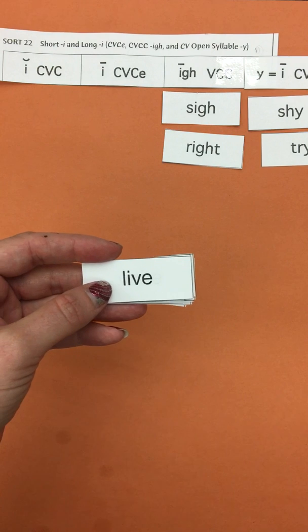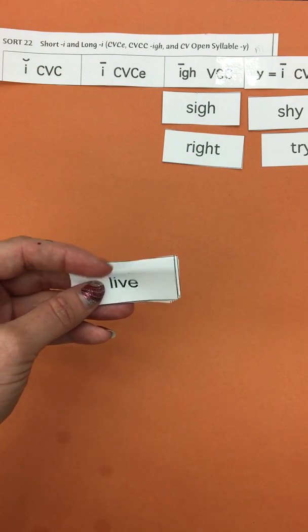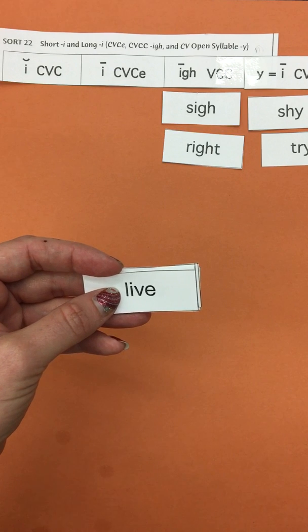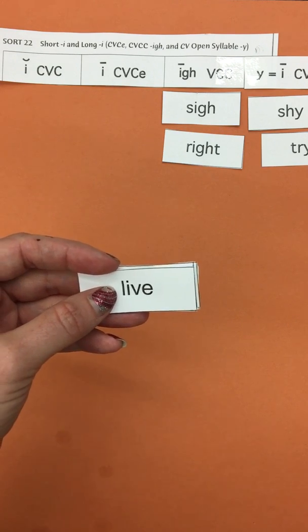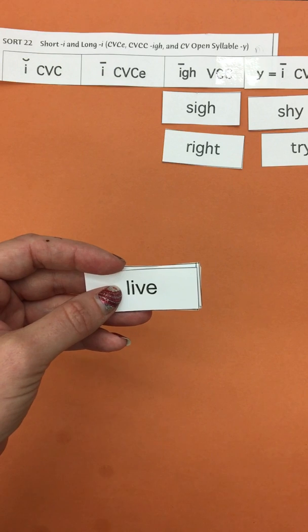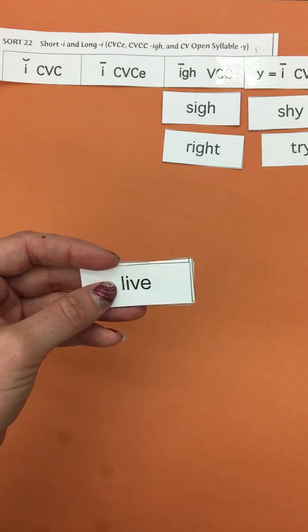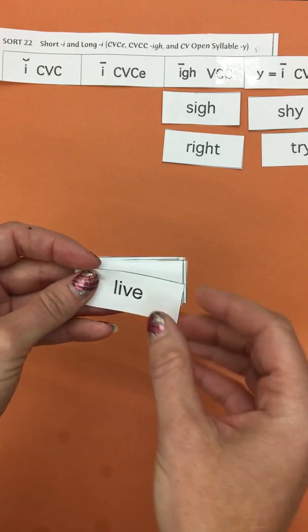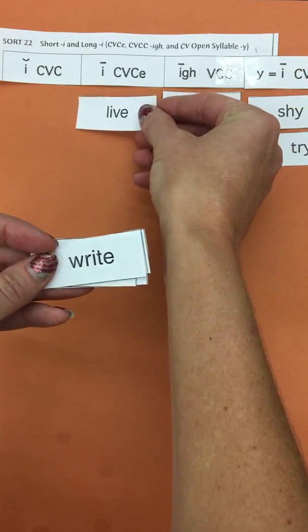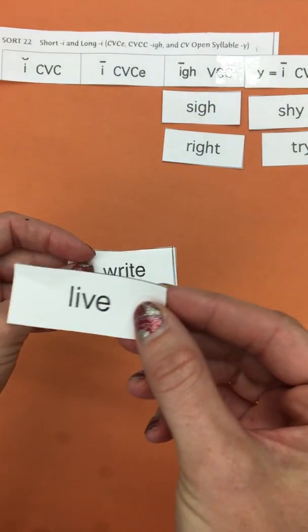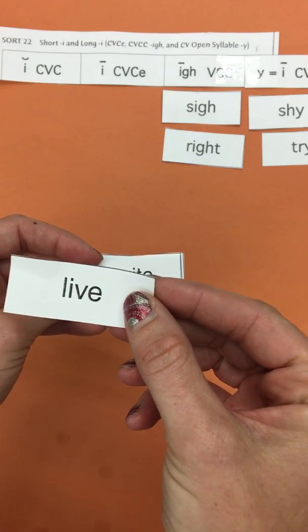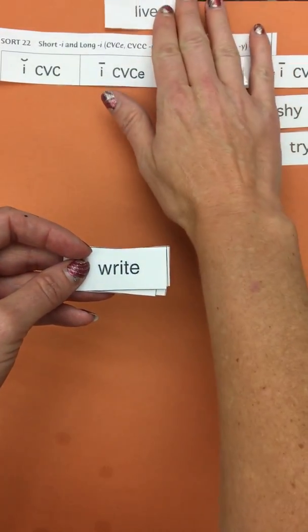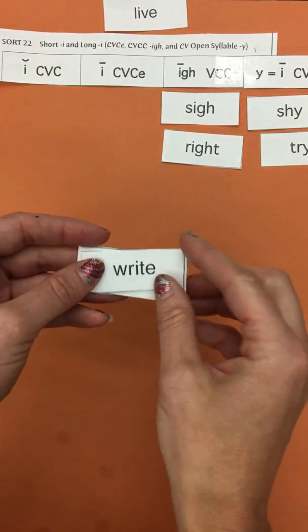Now this is an interesting word. This is a homograph, not a homophone that we know so well, but a homograph. That means the same spelling, but it makes two different sounds depending on what sentence it's in. Is it live or is it live? So if you say live, it would go here silent E. But if you say live, where you hear a short I sound, it would be an oddball. So I'm just going to put it in the oddball category so that we can remember that that is a homograph.